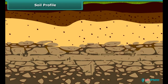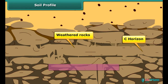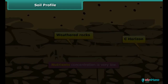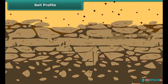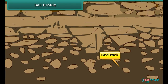The fourth layer is the C horizon. This layer is rocky and made up of weathered rocks. Nutrients concentration is low in this layer. The final layer is made of solid rocks and is commonly known as bedrock.